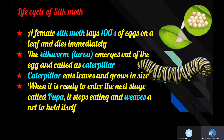A female silk moth lays around hundreds of eggs - usually 400 to 500 eggs - on the leaf of a plant. For example, Bombyx mori lays eggs on mulberry leaves. The silk moth dies immediately after laying eggs.